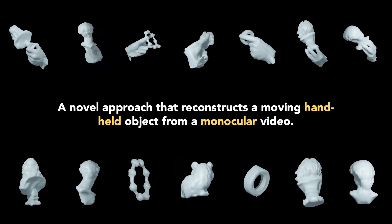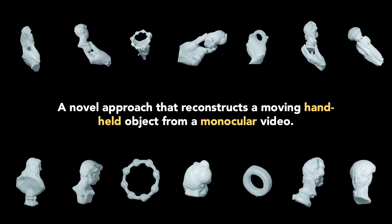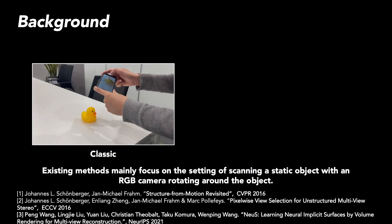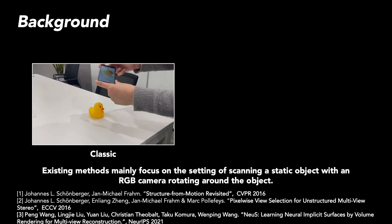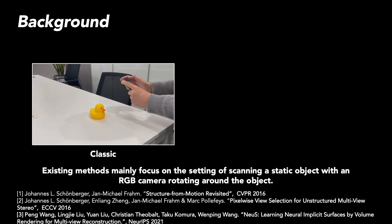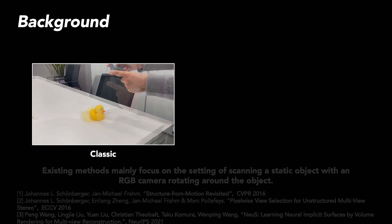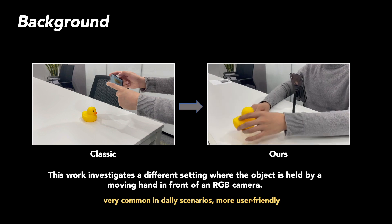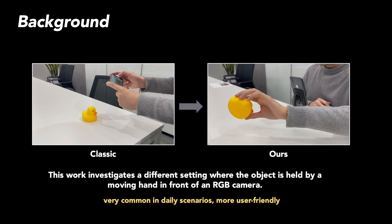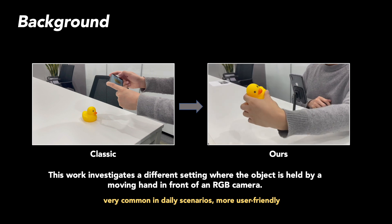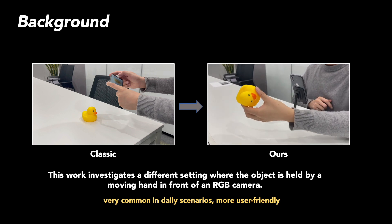This paper presents an approach to reconstructing a handheld object from a monocular video. Existing approaches mainly focus on the setting of scanning a static object with an RGB camera or depth sensor rotating around the object. This work investigates a different setting where the object is held by a moving hand in front of an RGB camera. This setting is very common in daily scenarios and more user friendly.